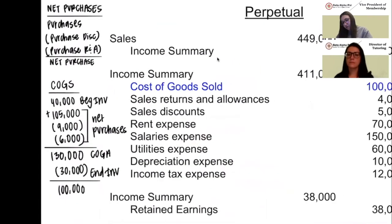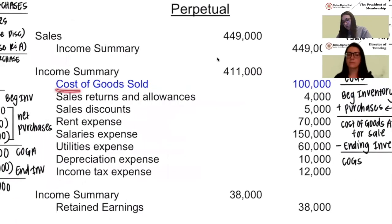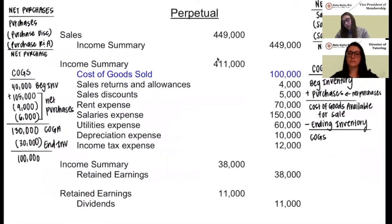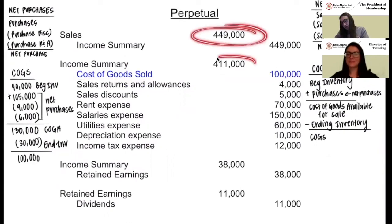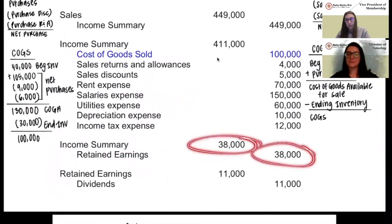In the perpetual method, instead of crediting beginning inventory, debiting ending inventory, and putting those in separate places, we put it all into cost of goods sold. Cost of goods sold has a normal debit balance because it's an expense, so we credit it to close it out. That's the only difference between perpetual and periodic — we use cost of goods sold instead of those separate accounts. The numbers going into income summary will differ, but the retained earnings balance will still be the same.